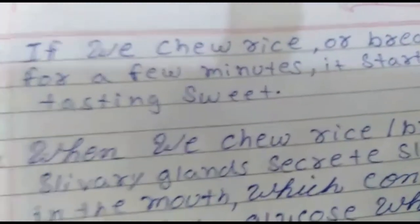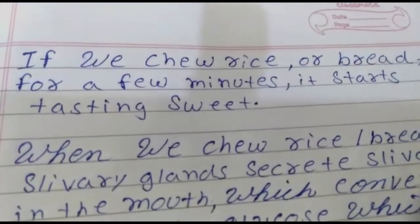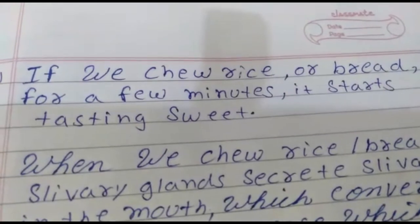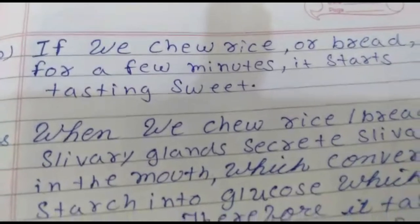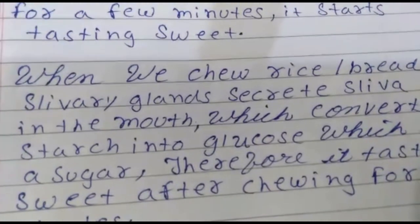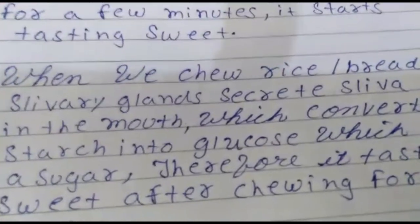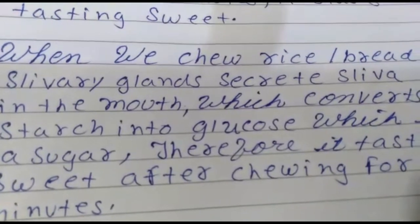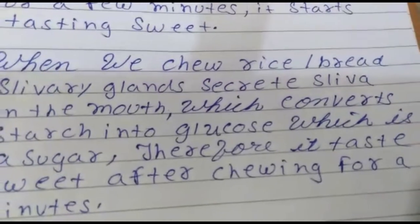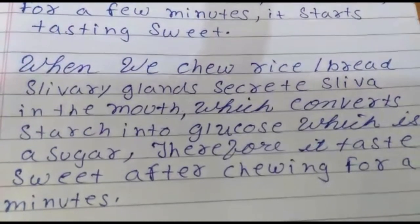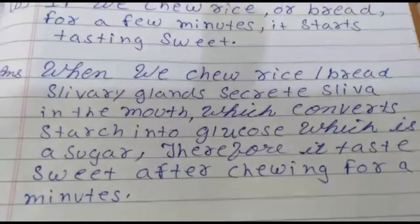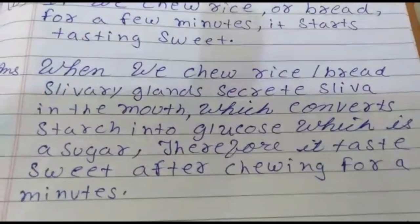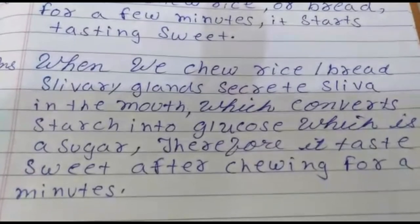If we chew rice or bread for a few minutes, it starts tasting sweet - why does this happen? When we chew rice or bread, the salivary glands in our mouth start secreting saliva, which converts starch into glucose, which is a sugar. Therefore the food tastes sweet after chewing for a minute.